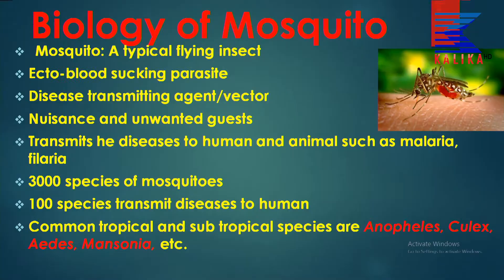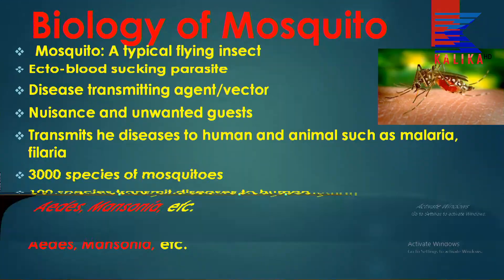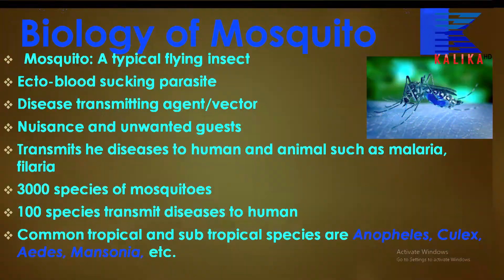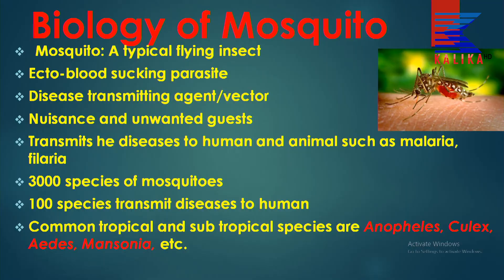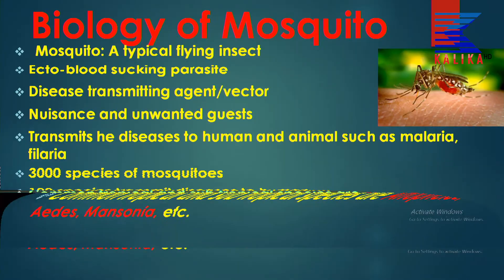They are very common in tropical and subtropical regions of the globe. The common tropical and subtropical species responsible for causing diseases to human beings are Anopheles, Culex, Aedes, and Mansonia, and many more.